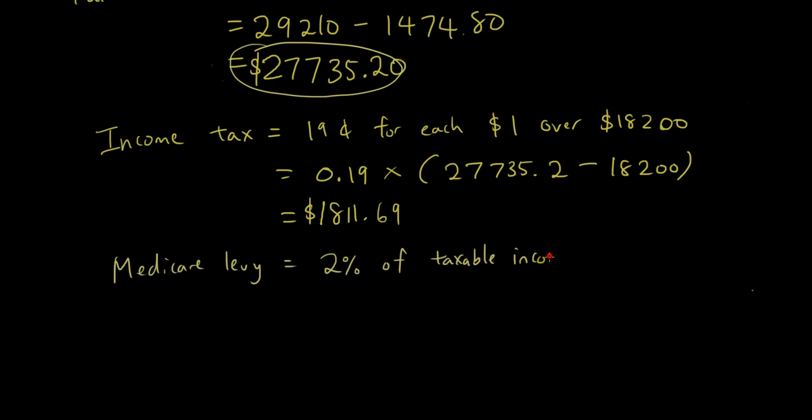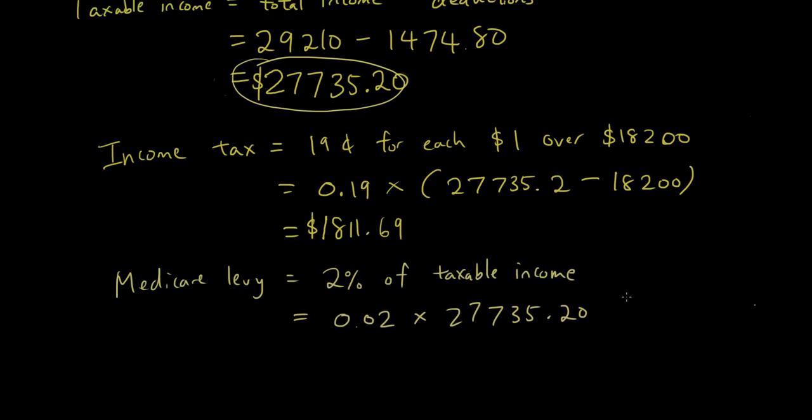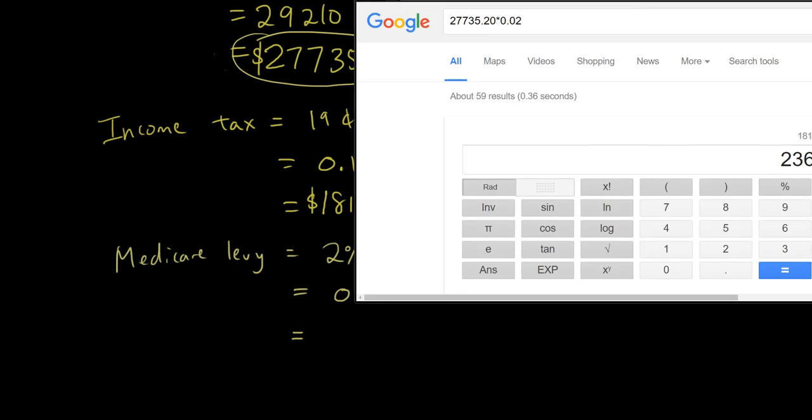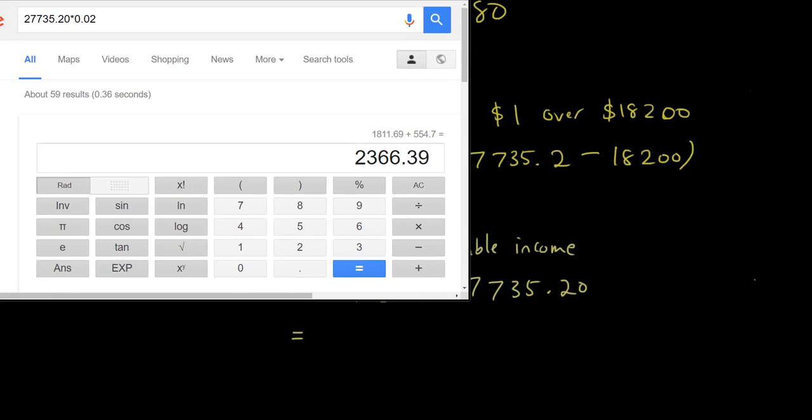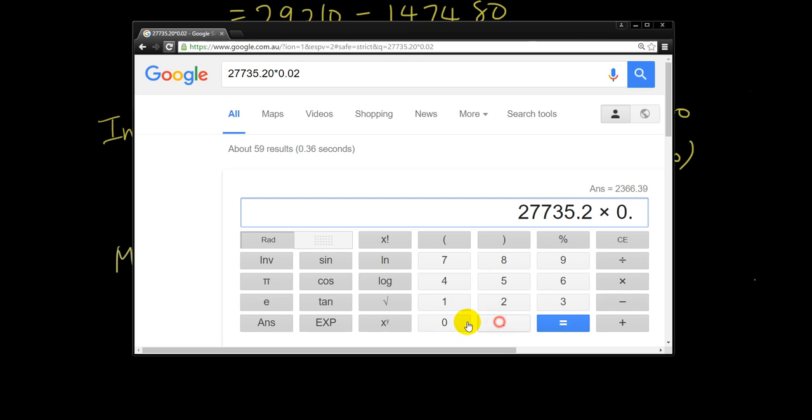Now who remembers what our taxable income was? 0.02 times. Our taxable income was $27,735.20. So putting that in the calculator, $27,735.2 times 0.02 and the answer is $554.70.